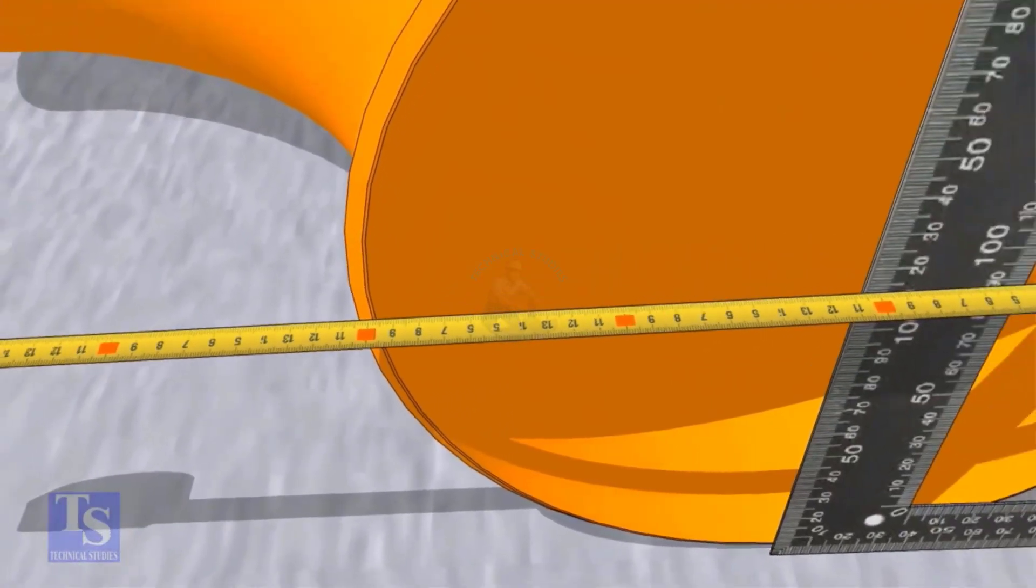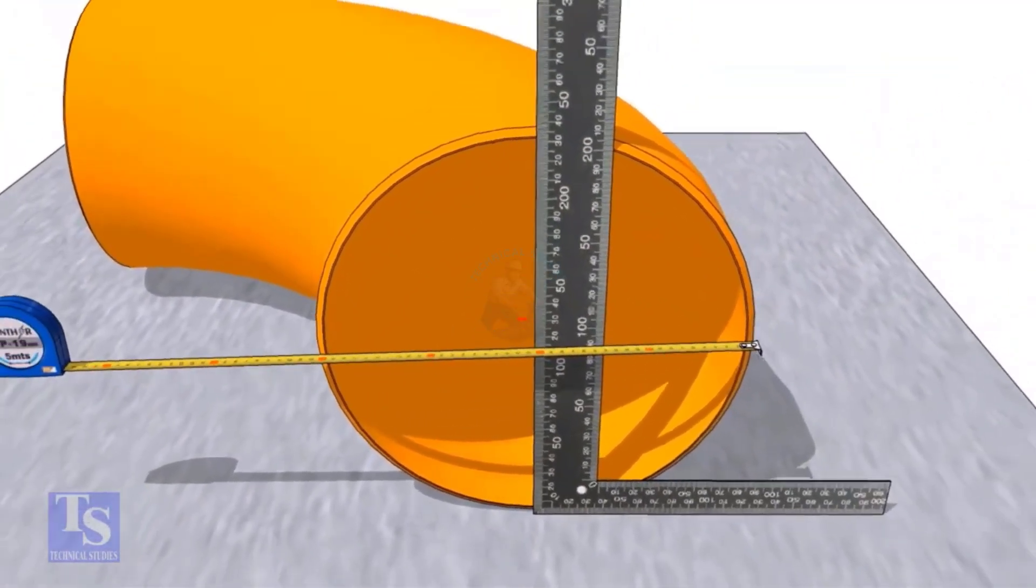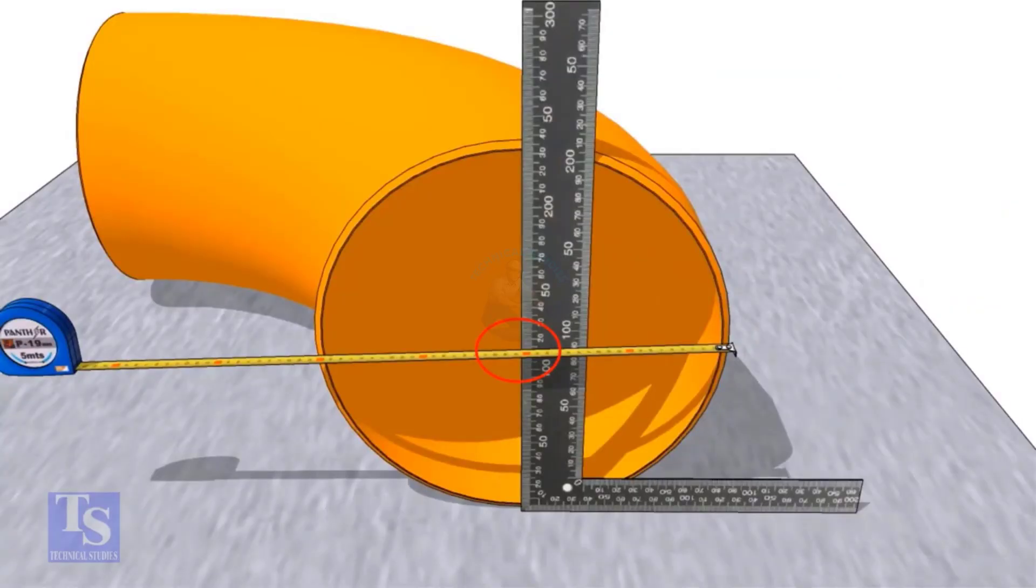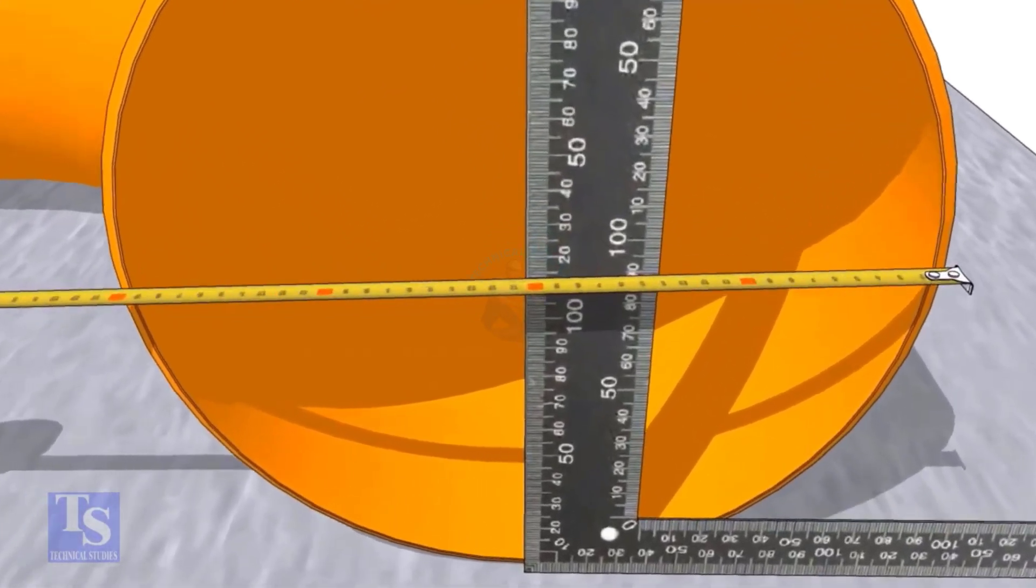Now put a right angle, tri-square, at the center of the elbow. Make sure the distance from the edge of the elbow to the face of the right angle is equal on both sides.